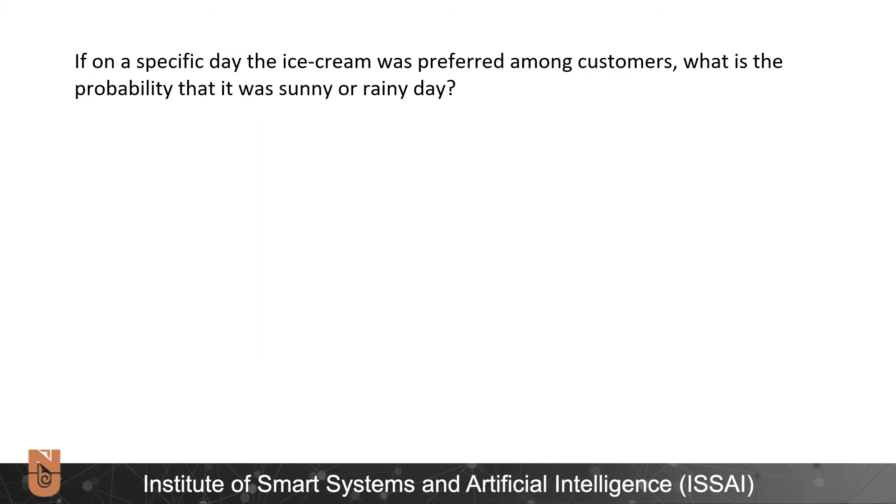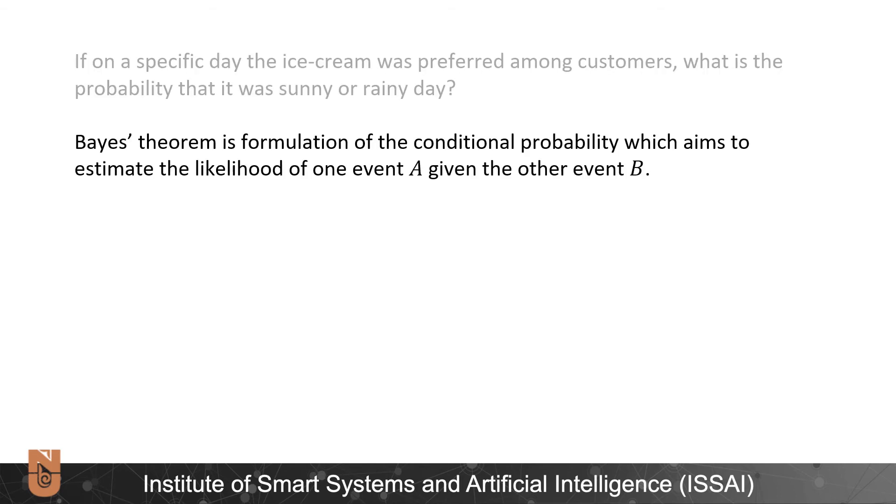Now let us try to answer the following question. If on a specific day ice cream was preferred among customers, what is the probability that it was a sunny day or rainy day? To answer this question we will use Bayes' theorem. Bayes' theorem is a formulation of conditional probability which evaluates the likelihood of one event A given the other event B.